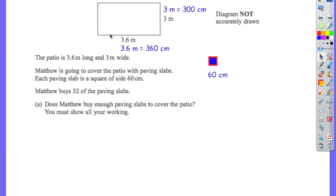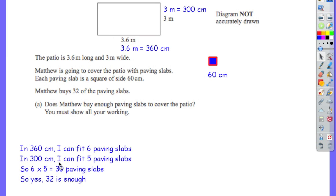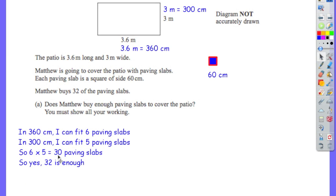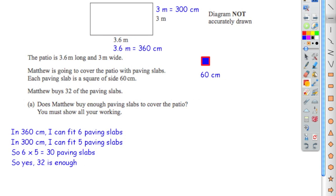That means you're going to fit in exactly 5 times 6, so 30 slabs in total. Therefore 32 slabs will be more than enough. In 360 centimetres you can fit 6 slabs; in 300 centimetres you can fit 5. Altogether you can fit 30 slabs in that area, so 32 is enough. That's the first method and I would recommend that way — it's the easiest one.